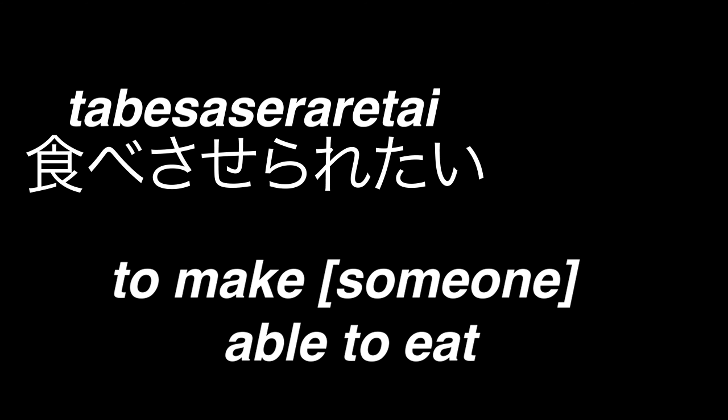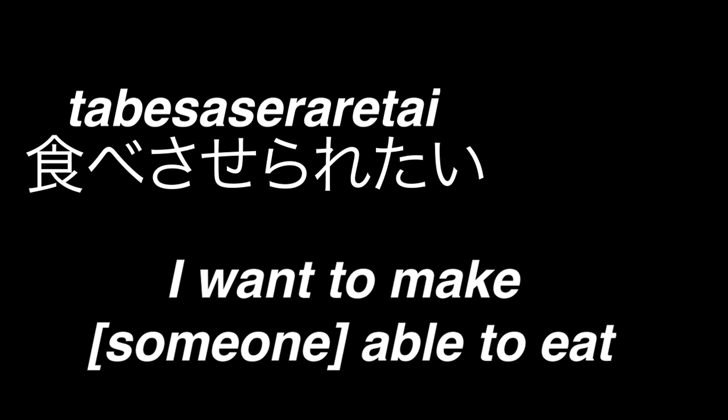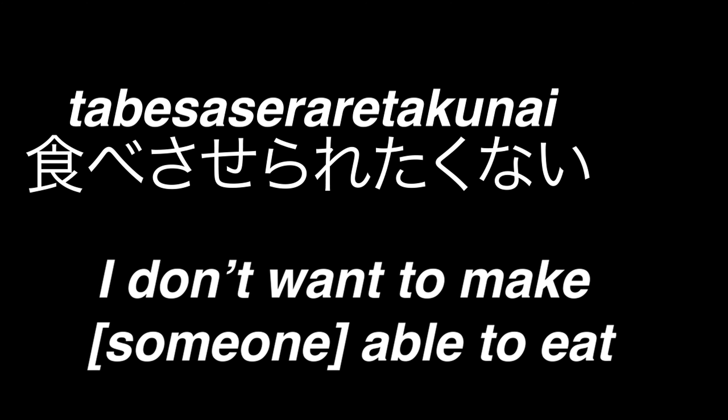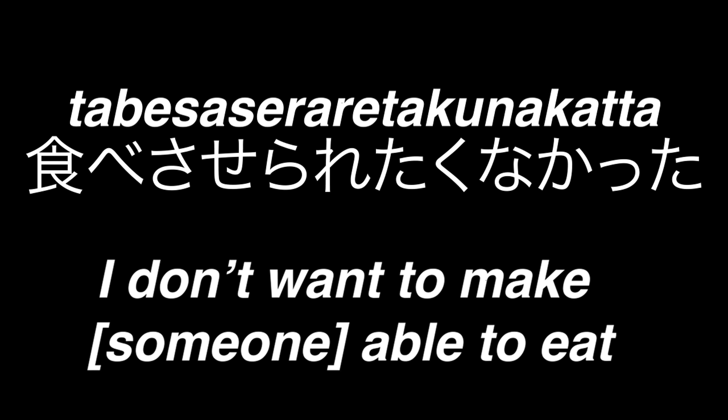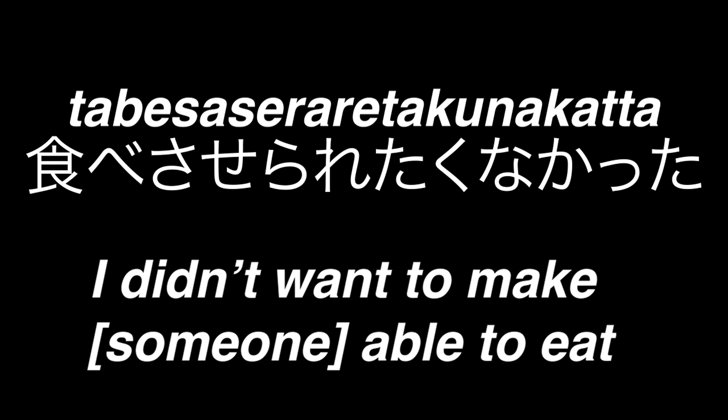Now let's add tai to get tabesaseraretai, giving the verb a meaning of I want to make someone be able to eat. Already the word is quite long, but we can still add more. Let's say we want to negate the verb: we take off i and add ku, which can connect the verb to nai, which negates the verb. So tabesaseraretakunai means I don't want to make someone able to eat. And if we make this past tense, we get tabesaseraretakunakatta — I didn't want to make someone able to eat.